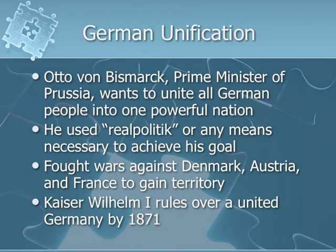German unification was led by Otto von Bismarck, the Prime Minister of Prussia, who wanted to unite all German people into one powerful nation. He used a strategy called realpolitik — any means necessary to achieve his goal — similar to what Machiavelli described during the Renaissance. Much like Italian unification, Bismarck started several wars against Denmark, Austria, and France to gain territory, and Kaiser Wilhelm I ruled over a united Germany by 1871.